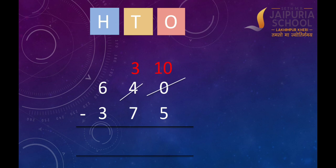Now we can subtract 5 ones from 10 ones. So, 10 ones minus 5 ones is equal to 5 ones. Let's write 5 under the ones column.